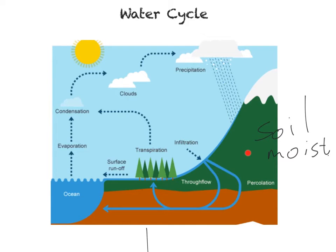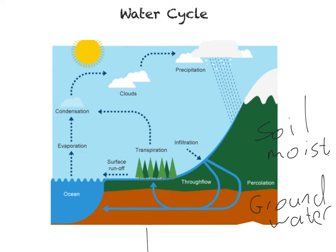Percolation is the movement from the soil layer down into the rock layer. This is sometimes referred to as groundwater. We also have another arrow here which shows that groundwater flow is the movement of water in the rock layer. So percolation moves the water in, it's stored as groundwater, and groundwater flow is the lateral movement.